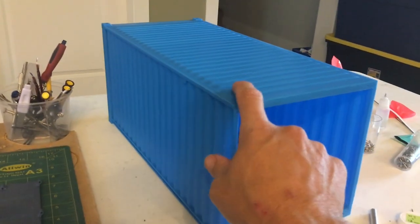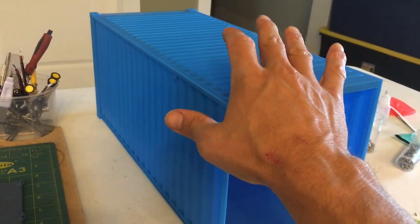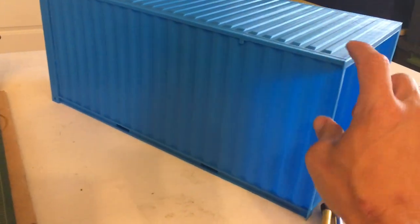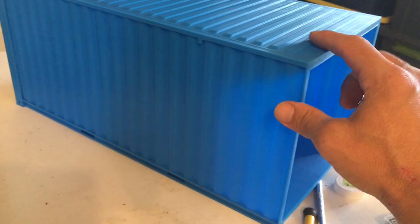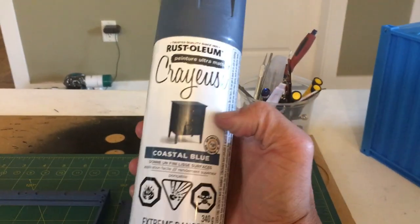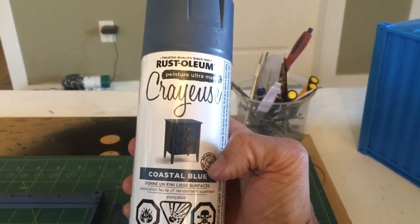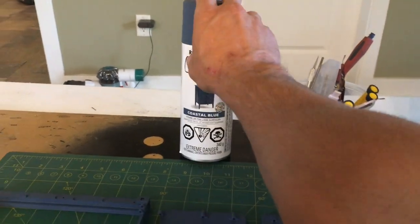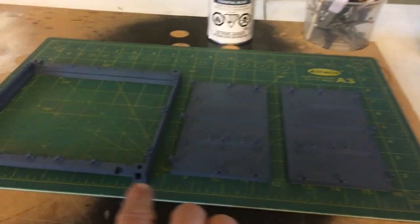So you can see here the original blue PLA that I printed it on, and I didn't like that finish because it's got a bit of a sheen to it. You can see in the light, and most containers have more of a matte finish. So I picked this stuff up here in coastal blue. I mean it's blue, but it's matte and I like that.